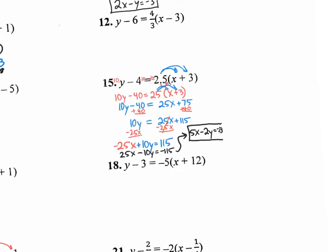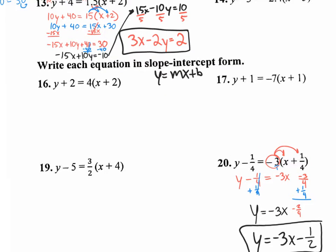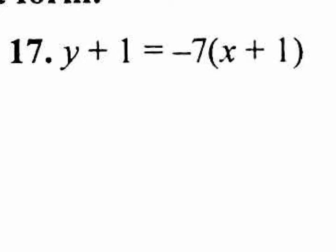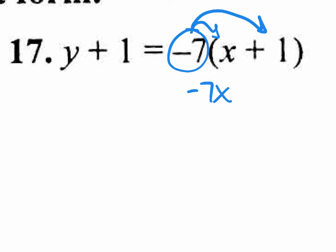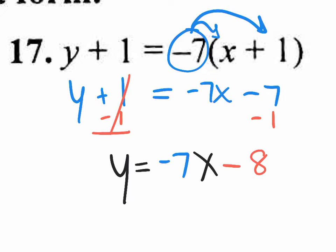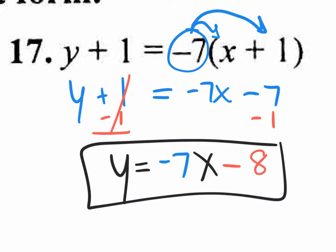Let's move on to number 17. The third part says write each equation in slope-intercept form, which is y equals mx plus b. The equation is given in point-slope form and we need to change it. Slope-intercept form doesn't have parentheses, so distribute: negative 7 times x is negative 7x, negative 7 times 1 is negative 7. Bring down the equal sign, y, plus 1. Now subtract 1 from both sides to get y by itself. Final answer: y equals negative 7x minus 8. It's easy to graph — crosses at negative 8, go down 7 over 1.